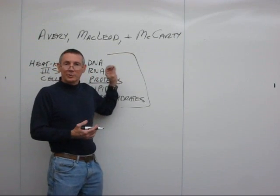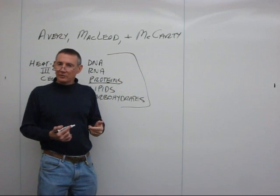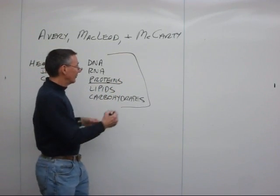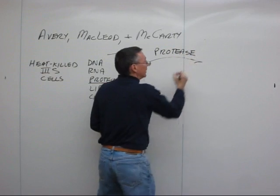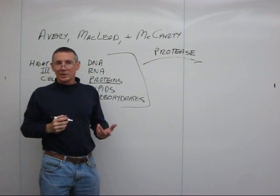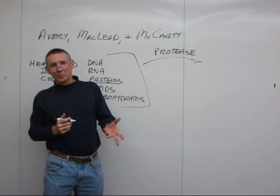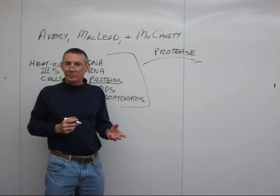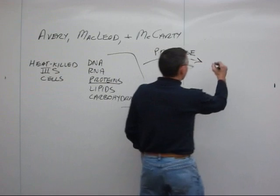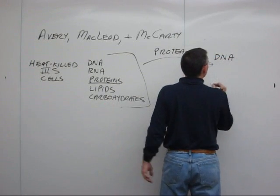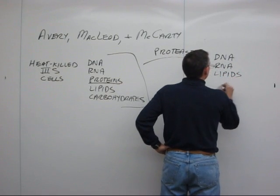Instead of just purifying one component and trying that, they took the opposite approach: they treated with enzymes to get rid of one component at a time. For instance, they treated the heat-killed 3S cell mixture with a protease enzyme — an enzyme that would hydrolyze peptide bonds in the protein and break it down into small oligopeptides or free amino acids. After doing that, what remains is everything except the protein: DNA, RNA, lipids, and carbohydrates.